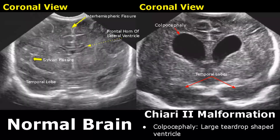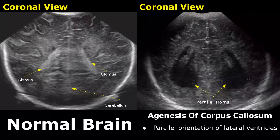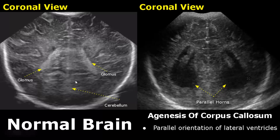Colpocephaly can also occur — this ventricle is large and has a specific teardrop shape. This coronal image shows colpocephaly; it is different from the batwing sign because it has a more rounded shape. This image shows the posterior aspect of the brain — this hyperechoic structure is the glomus of the choroid plexus, which is basically the largest part, and down here is the cerebellum.